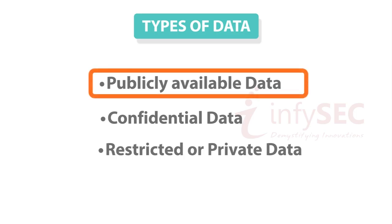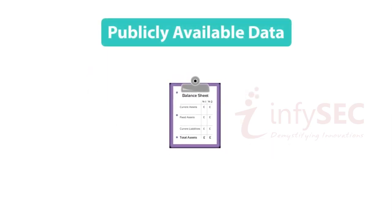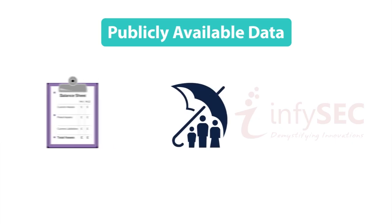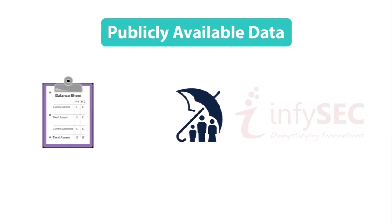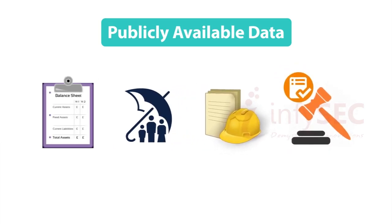When data is publicly available to all, it is known as publicly available data. Examples include a bank's balance sheets and insurance policy details, a government's tender notices, and job posts held by authorities.